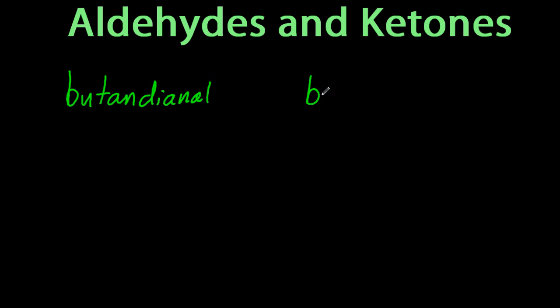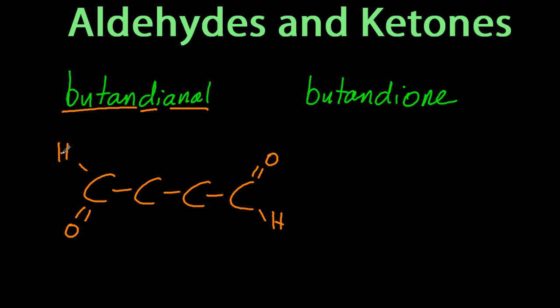Let's look at butanedial and butanedione. Butan is four carbons. And I've stuck two aldehyde groups on. And that's butanedione.